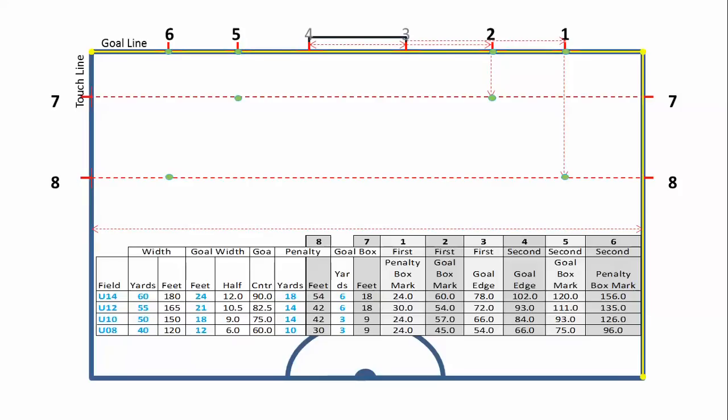Using the measurements from one, two, five, and six, I'll put stakes in as shown. From there, simply drag your mason line around the stakes and use your lining machine to put the lines down.